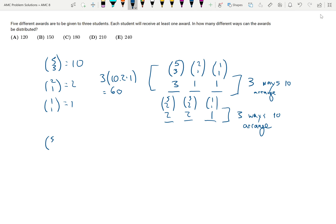Now for the 2-2-1 pattern: five choose two is ten, three choose two is three, and one choose one is one. So we have three times ten times three times one, which equals three times thirty, which is ninety.